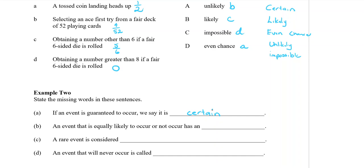A rare event is considered unlikely. And an event that will never occur is impossible.